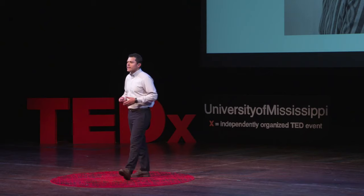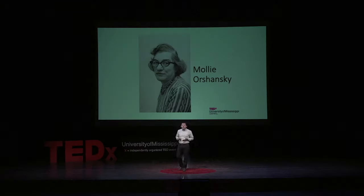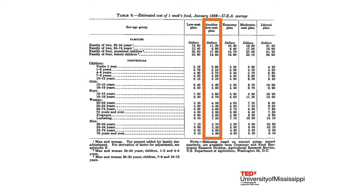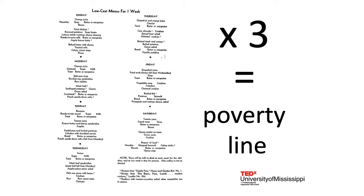That's when Molly Orshansky, a government statistician, developed a simple way to do it. At the beginning of the 60s, an average American family spent about one-third of their income on food. So Orshansky calculated the cost of feeding that family using the cheapest government food plan. Then she did some simple math — she multiplied the cost of that food plan by three to obtain the poverty thresholds for families of different sizes and compositions.